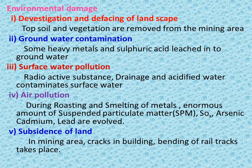Surface water pollution occurs as radioactive substances, drainage, and acidified water contaminants affect surface water. Air pollution occurs during roasting and smelting of metals — enormous amounts of suspended particulate matter (SPM), sulphur oxides, arsenic, cadmium, and lead are released, polluting the air. Due to mining, subsidence of land occurs, causing cracks in buildings and bending of rail tracks.